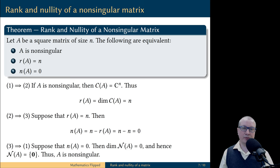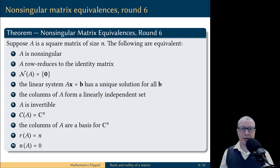Let's not forget to add our new information to our list of equivalences for non-singular matrices. Now we have two extra criteria to add to this list. A matrix A is non-singular is equivalent to saying that its rank is maximum possible, and its nullity is minimum possible.